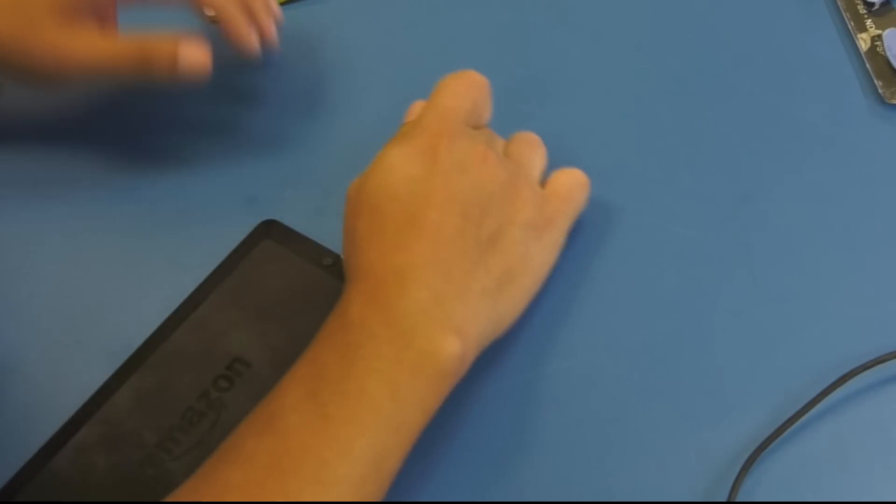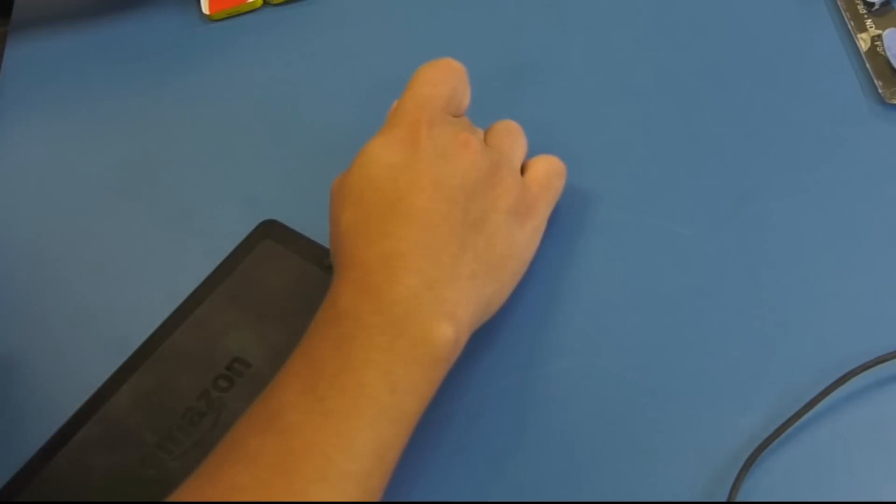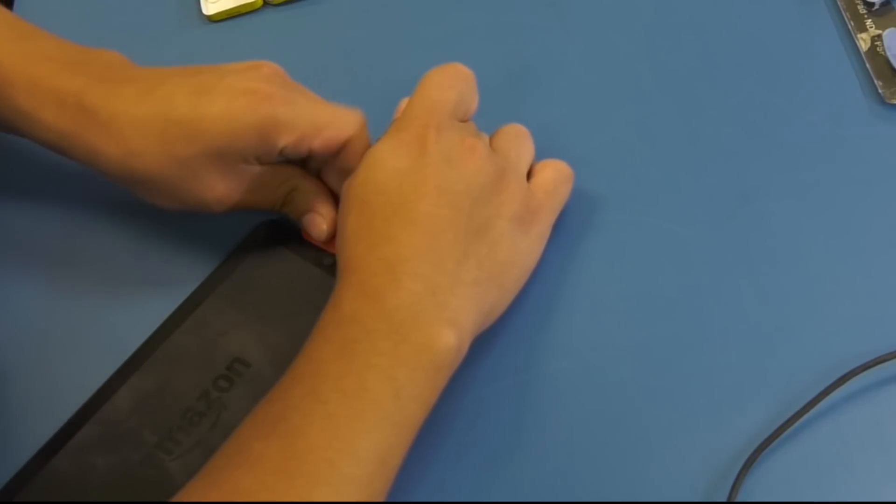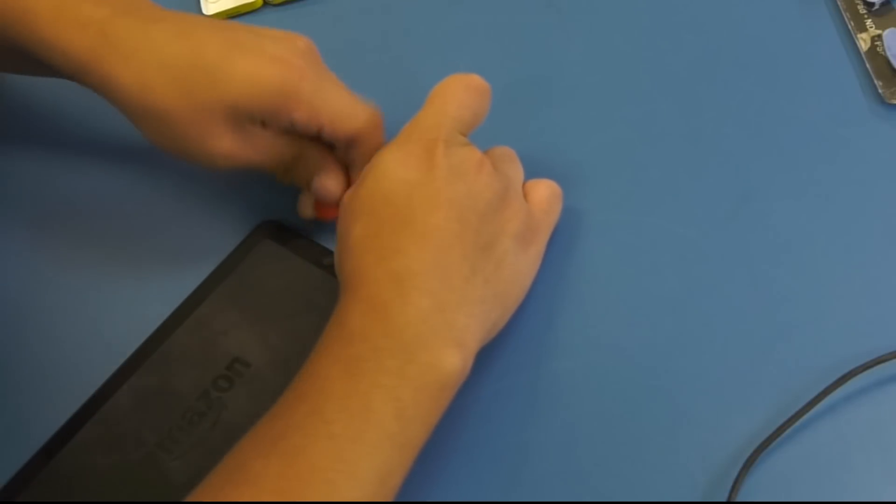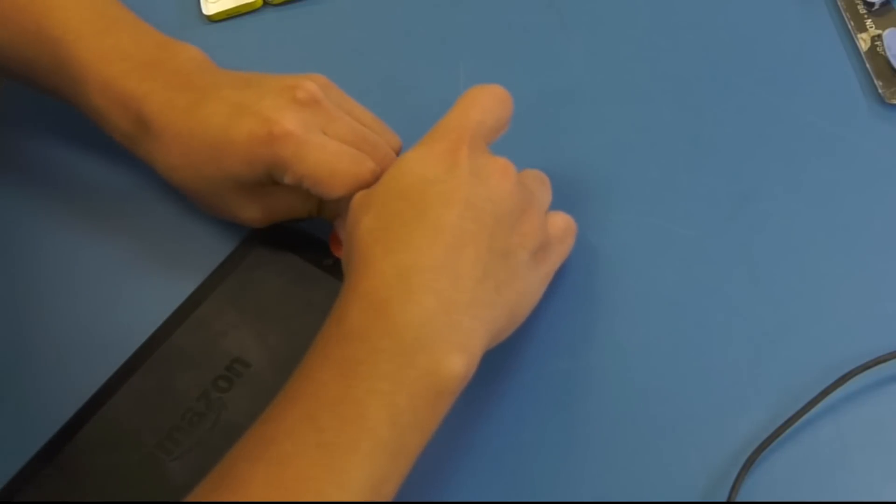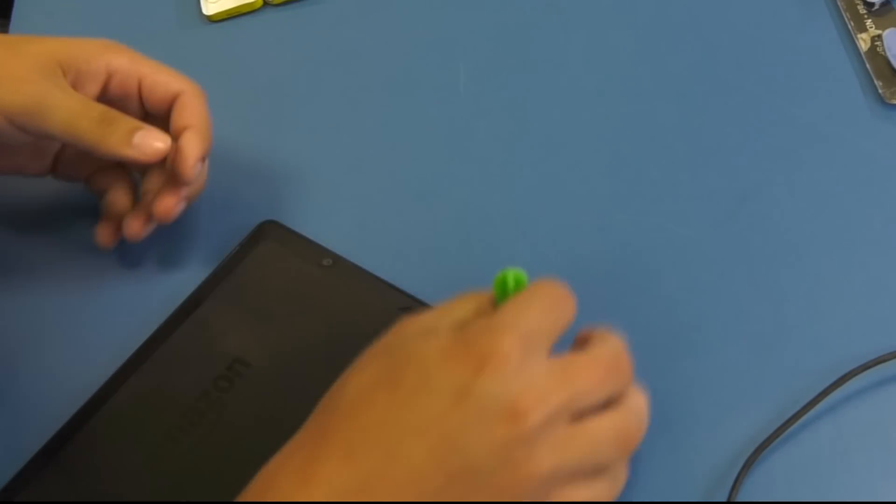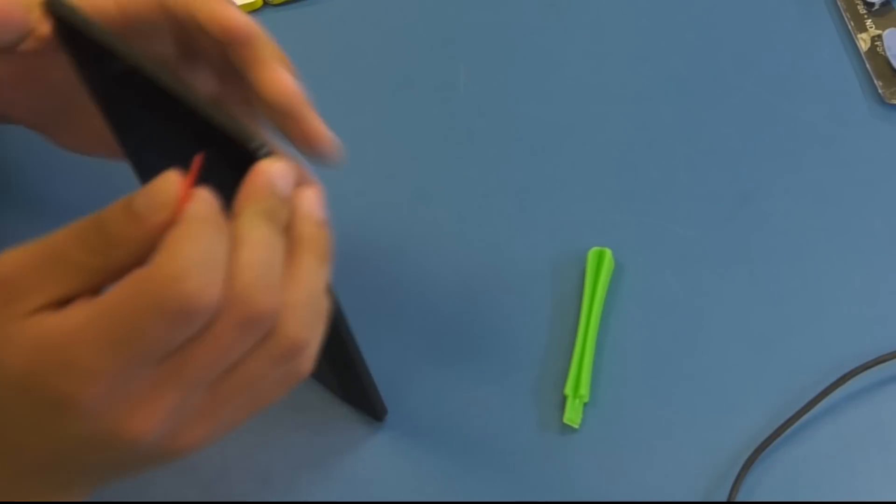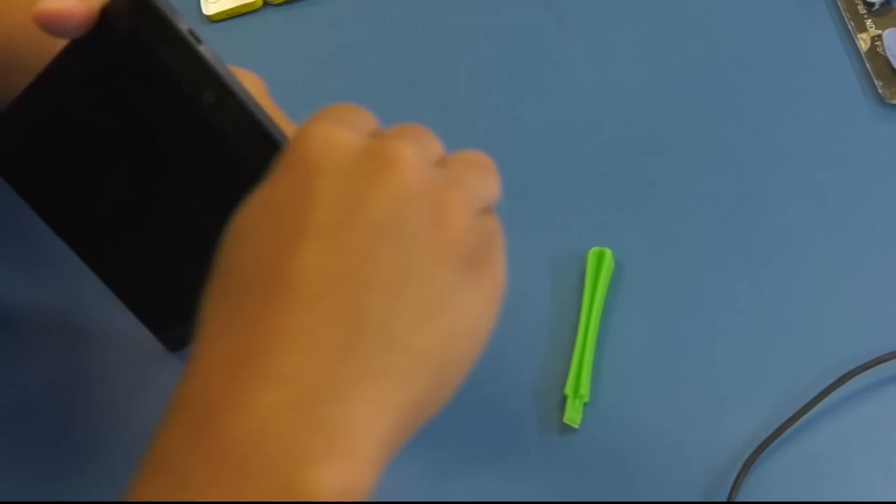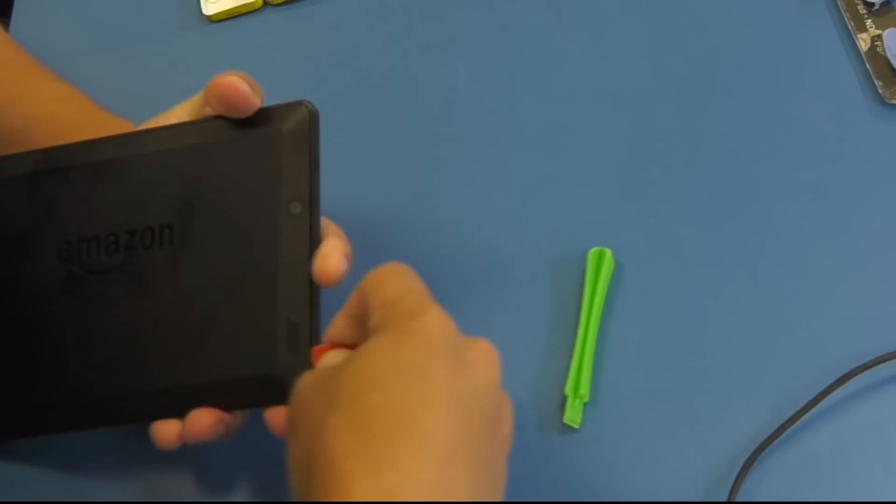So I pry it open and I'm going to take a pick, guitar pick, and be careful with the power button and the charging port on the other side. But other than that, just go around it and pry it open. It's just plastic so you'll hear the clips as they come apart.